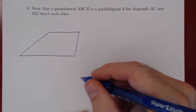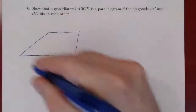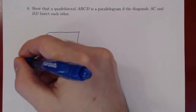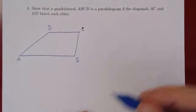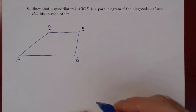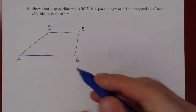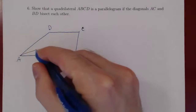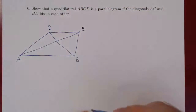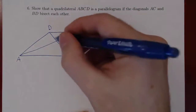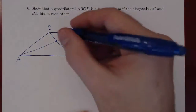As always, label the vertices counterclockwise. It doesn't matter which one you start with, but always go counterclockwise. So I'll start with A, B, C, and D. What is the only assumption here — that the diagonals bisect each other? So we draw the two diagonals AC and BD. Now we can give the intersection of the two diagonals a name — obviously we can call this E.